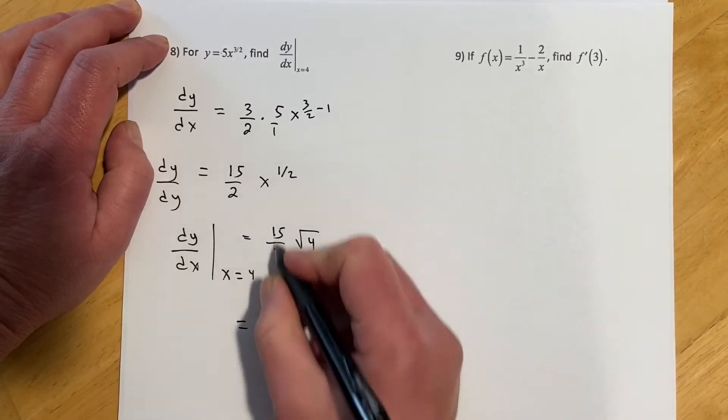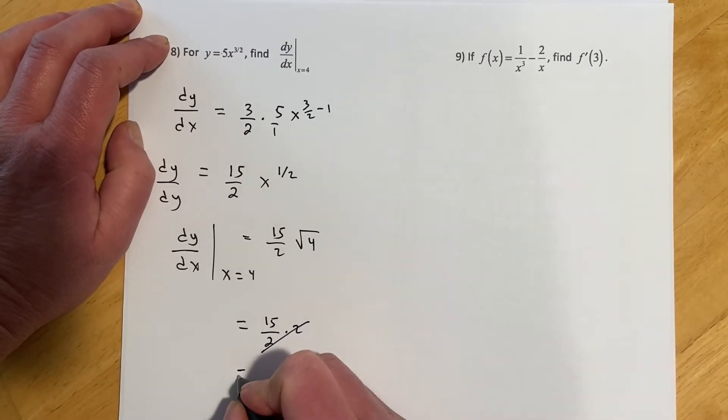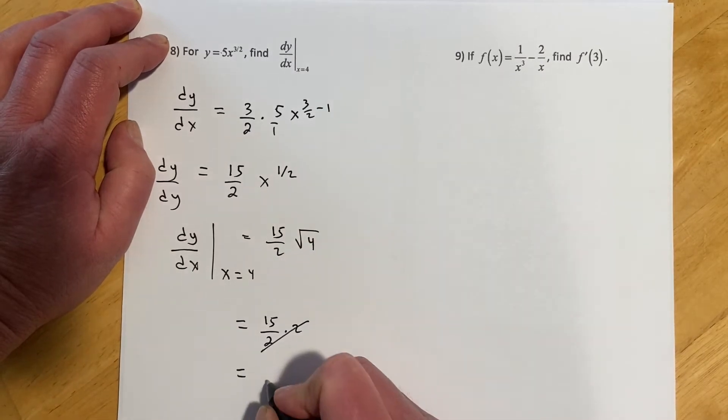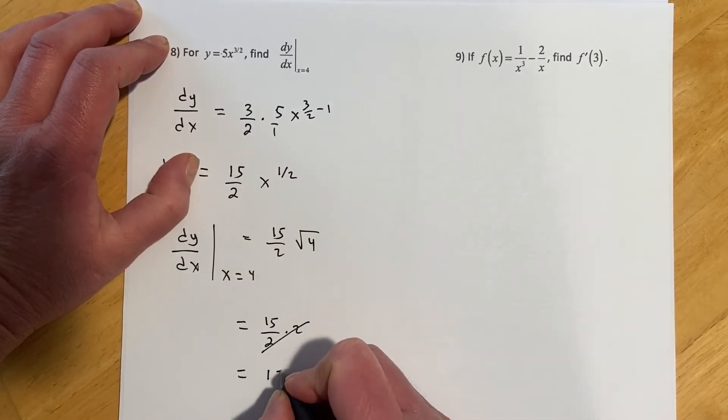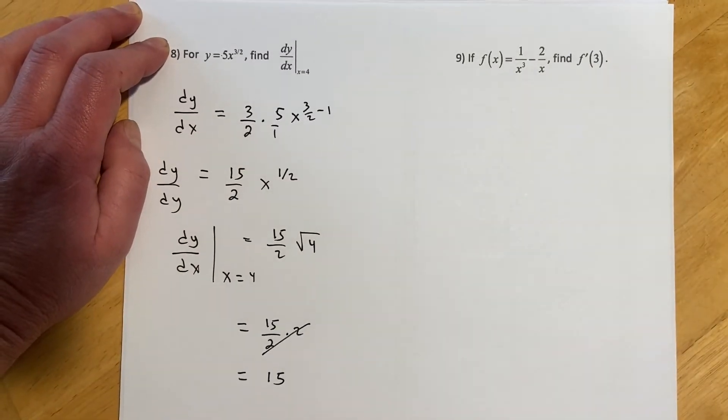And that equals, so that's 15 over 2 times the square root of 4, those would reduce, and so the derivative evaluated at 4 is 15. So the instantaneous rate of change at that point would be 15, or the slope of the tangent line at that point would be 15.